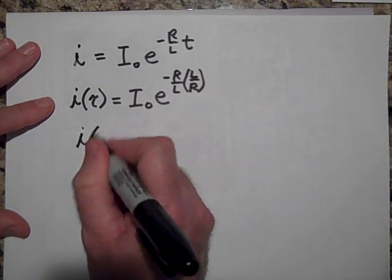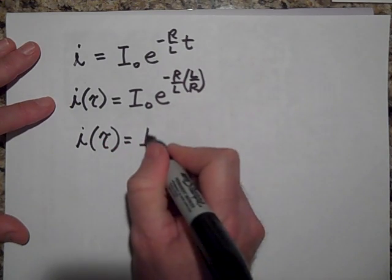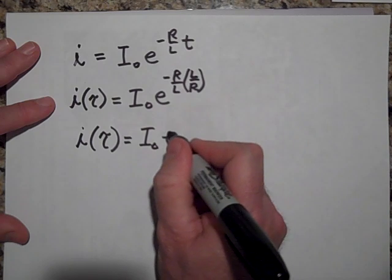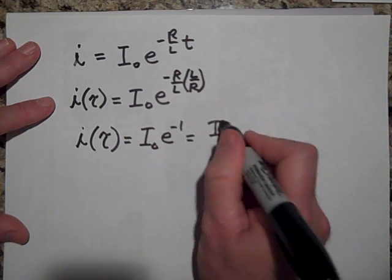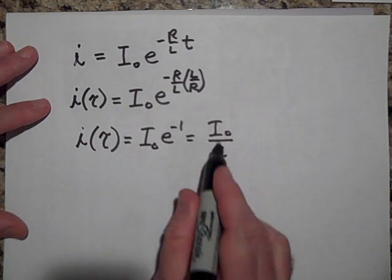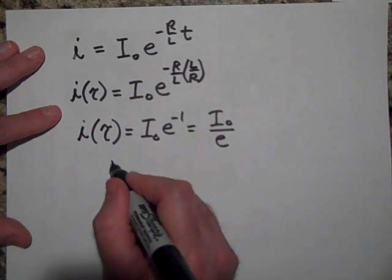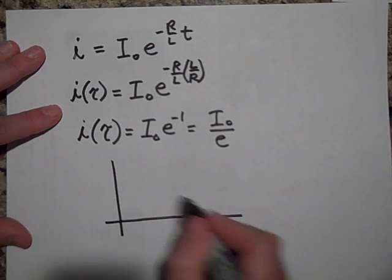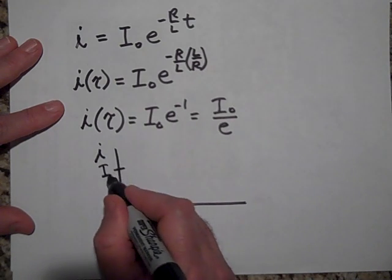You're going to get, this is going to be just negative one, and so that's going to equal after one time constant it's going to be equal to I₀ e to the negative one, or I₀ over e.